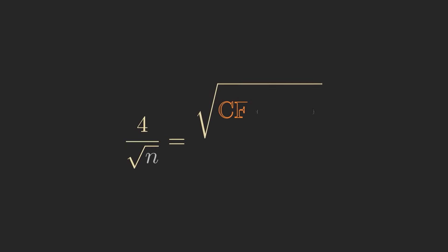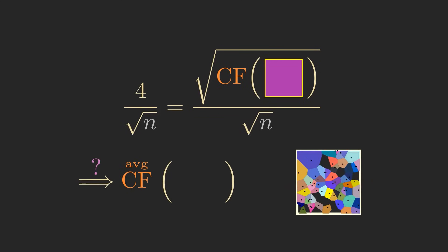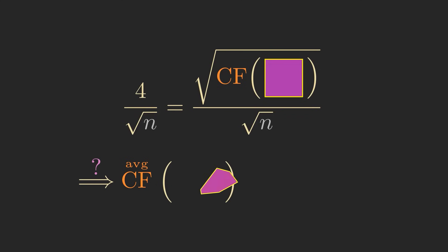Now you may think that because we got such a good approximation using the compactness factor for a square, that perhaps the average Voronoi cell has the same compactness factor as a square.